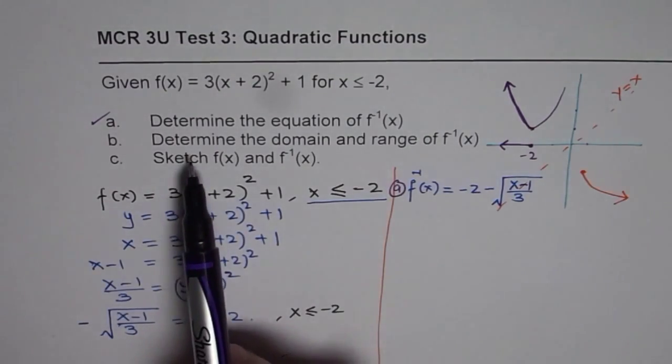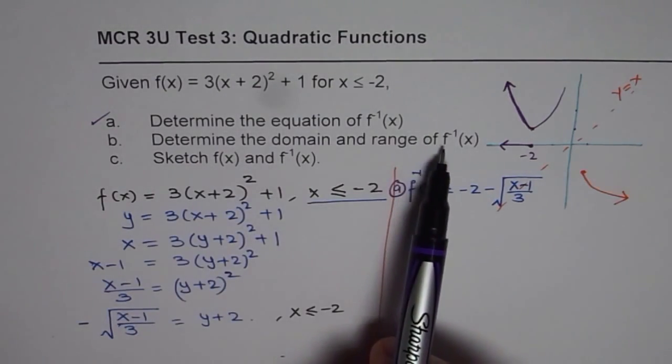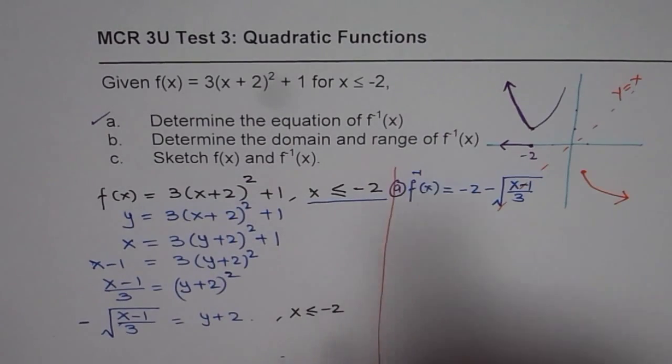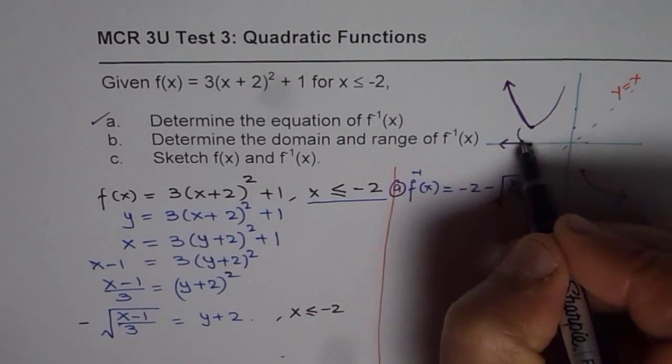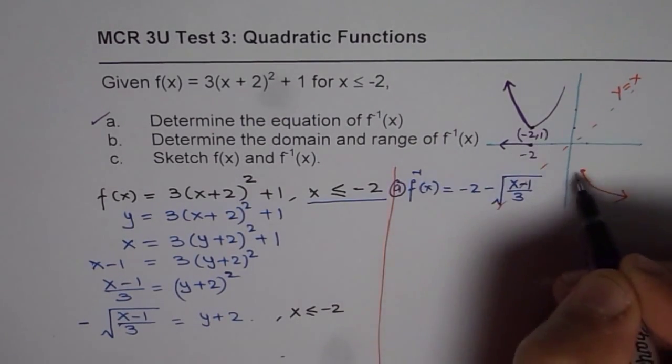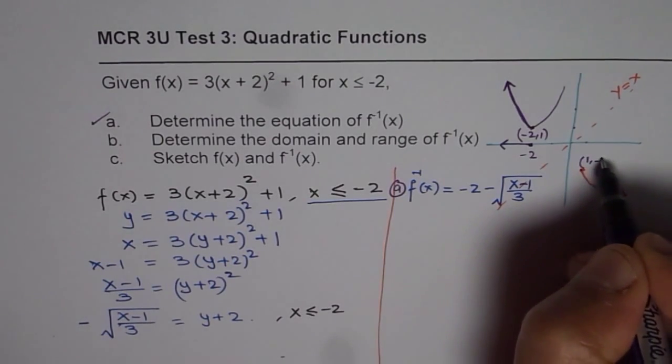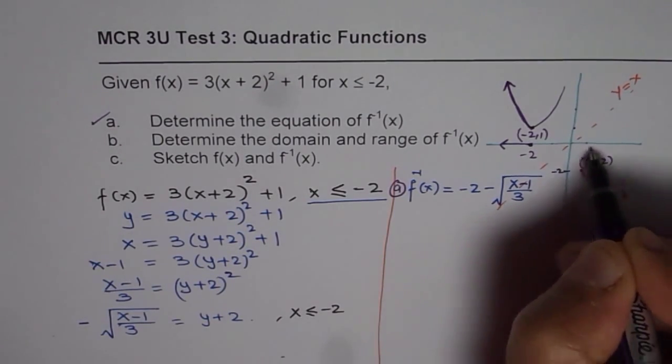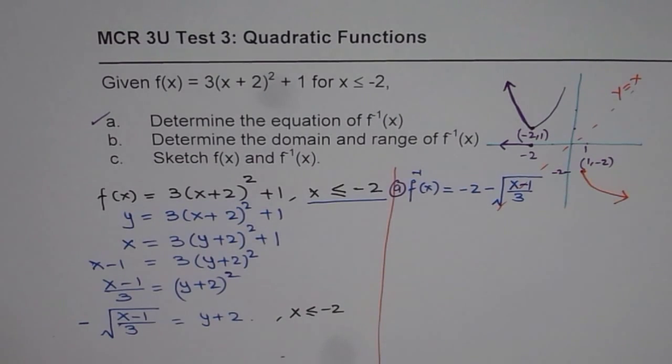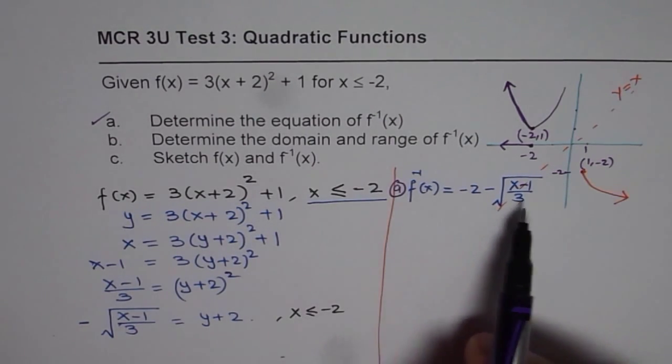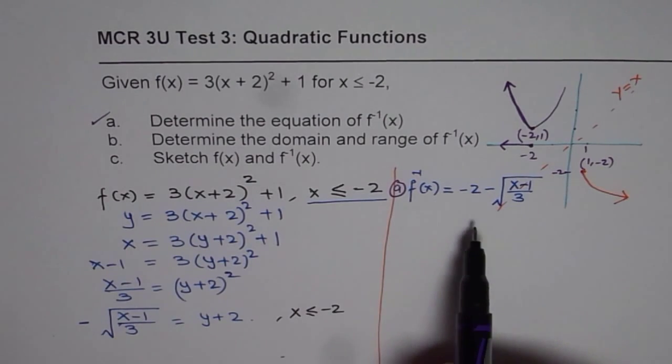Now we need to determine the domain and range of this function. Well, you knew this point coordinates are minus 2 and 1 and this coordinates will be swapped. So it will be 1 and minus 2. So this is minus 2 for us and that is 1 for us.